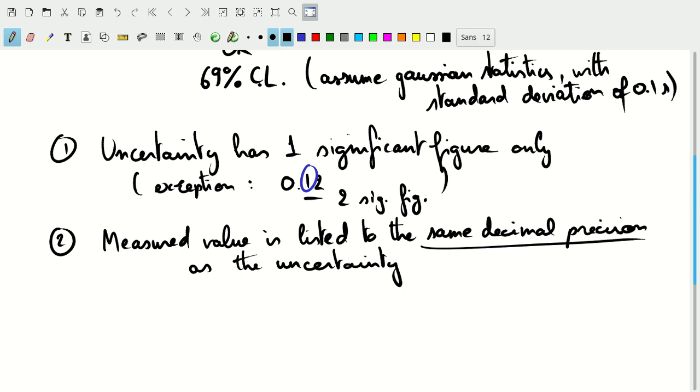So we can have 0.5 plus or minus 0.2. If we have a more accurate uncertainty, like 0.12, where I've used this rule here, then we can also list an additional decimal in the measured value.